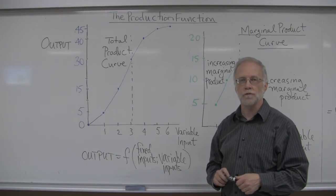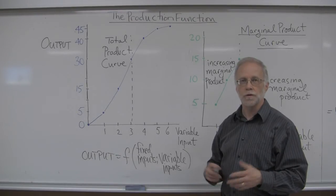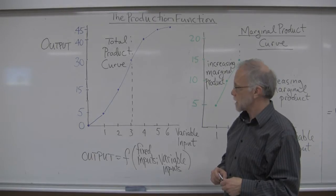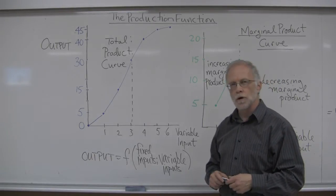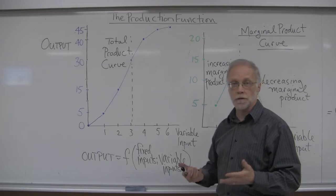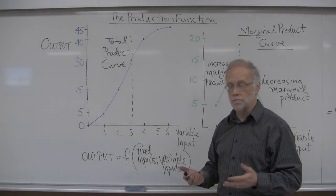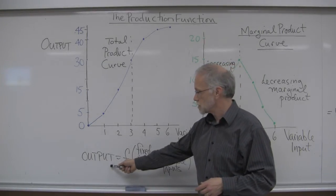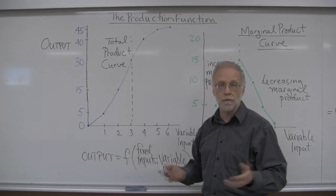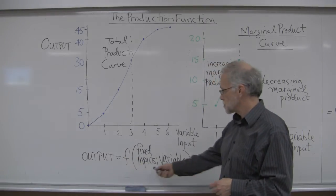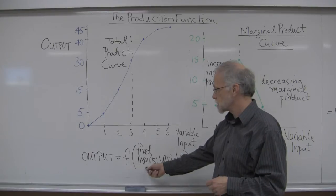This is a short video about the production function, just to give you an example of how we can think about it. We're going to think about production in a very simple way. We're going to imagine that some product — I'll just call it the output — we could think of maybe an agricultural output, is produced using some fixed inputs.